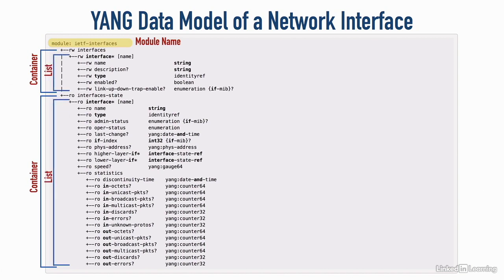Inside each container we have a list. In the top container, the list says RW interface star, followed by the word name in brackets. We're not specifying an interface name here — we just put the interface name in where it says name, meaning we could have multiple instances: a list of several interfaces like gigabit 1, gigabit 2, and so on. The name of the interface is called the key, and each interface has a unique key. The interface has several attributes, and each attribute is called a leaf.